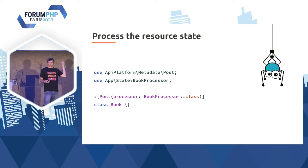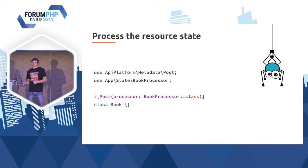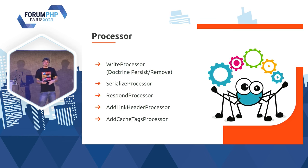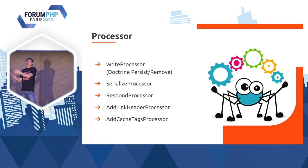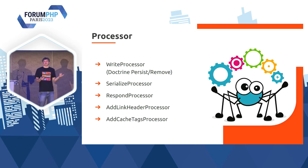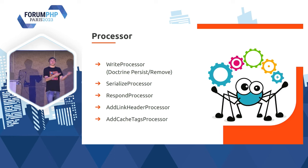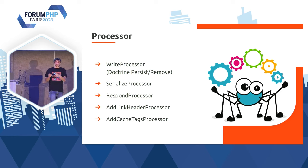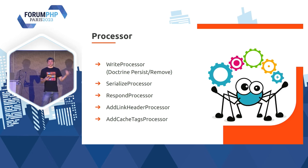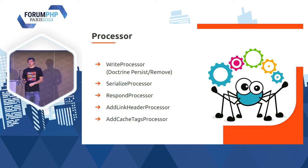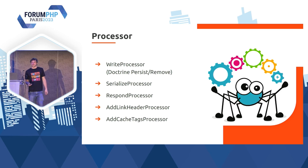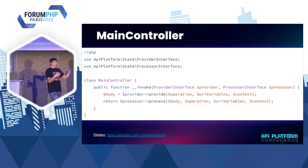Cette interface, de la même manière que le provider, peut se brancher sur n'importe quelle opération d'API Platform : GET, POST, PUT, ou une API Resource même. Dans API Platform 3.2, on a aussi plusieurs processeurs : Write Processor qui va persister la donnée ou la supprimer dans le cas d'un DELETE. Serialize pour afficher du JSON. Respond transforme l'objet livre, par exemple, en réponse HTTP où il va rajouter les en-têtes. Add Link pour ajouter des en-têtes de lien et une mécanique de cache pour ajouter des en-têtes de cache.